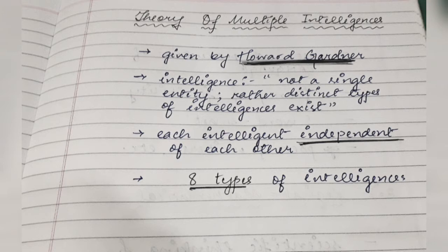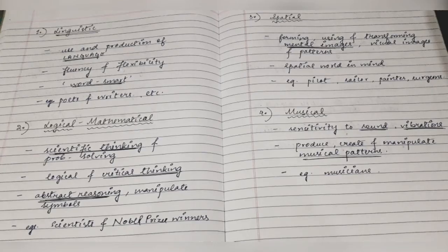According to Howard Gardner, he defined eight types of intelligences. The first is Linguistic Intelligence, which is used for the use and production of language. A person's fluency and flexibility in language is formally assessed to determine if they are linguistically intelligent. Those who are linguistically intelligent are also called 'word smarts' — for example, poets and writers.